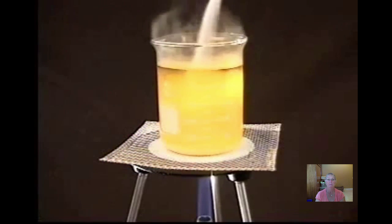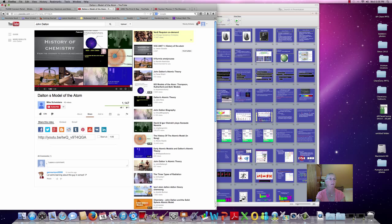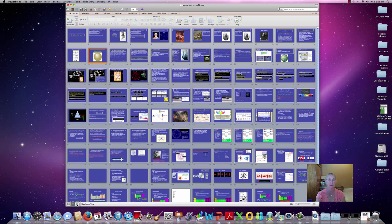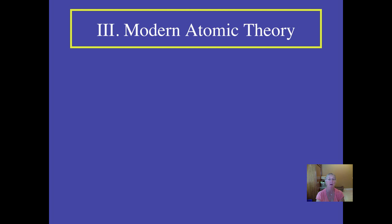Dalton made tremendous contributions to the understanding of the atom, but his discoveries were not complete. Considering he was working in the 1800s, he was doing a pretty good job, and the fact that most of his model still holds true today — with a few exceptions — is remarkable given the equipment and technology available at the time. Dalton's model will soon evolve into the modern atomic theory as researchers from the late 1800s and early 1900s begin to break apart the supposedly uncuttable structure. Please be advised your teacher will have a post-vodcast activity. We'll see you on the next podcast about the modern atomic theory.